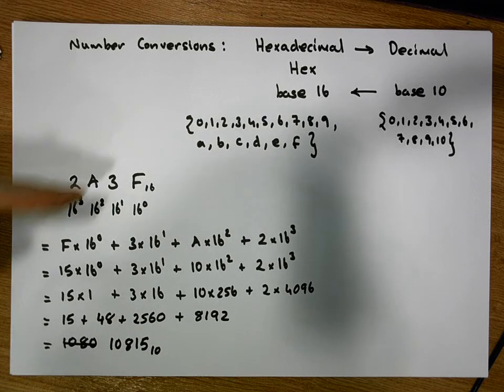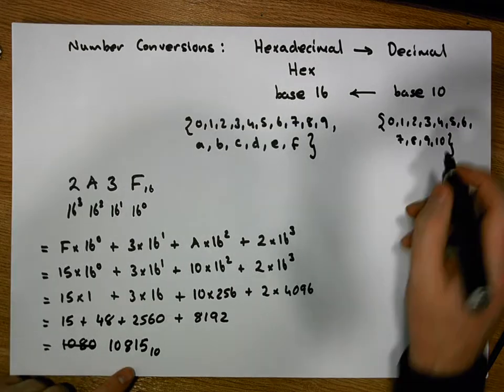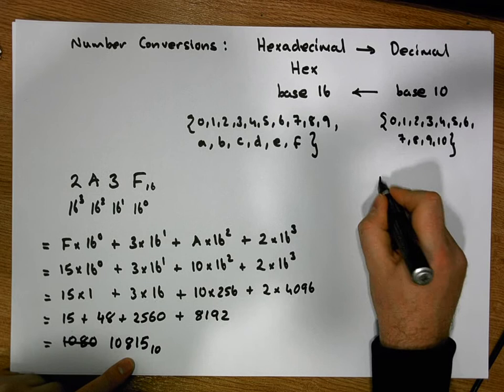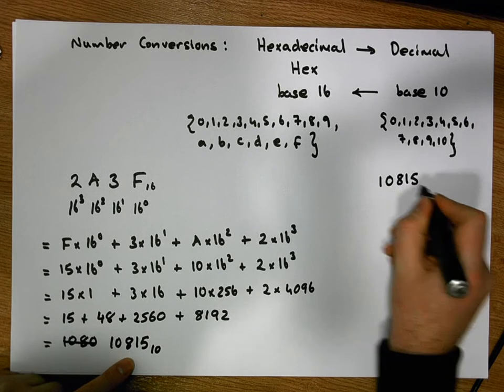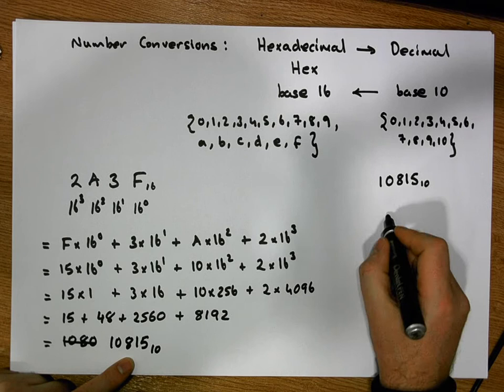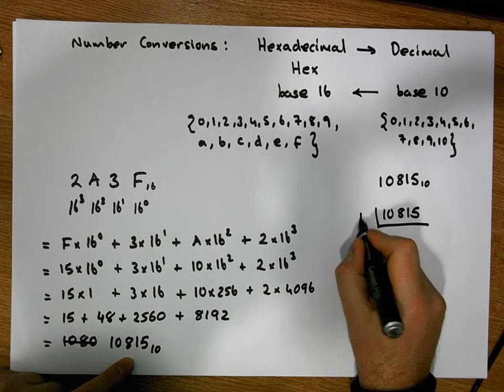So that's how we convert from hexadecimal to decimal. Let's concentrate on converting from decimal back into hexadecimal. What we do is we take our decimal number, in this case it's 10,815 in base 10, and we're going to successively divide 10,815 by 16 and keep track of how many remainders we have.